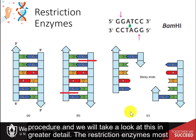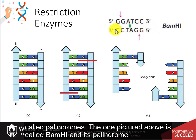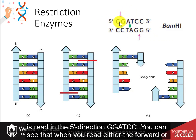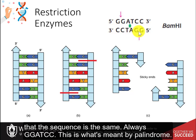The restriction enzymes most widely used in cloning recognize specific sequences within the DNA called palindromes. The one pictured above is called BamHI, and its palindrome is read in the 5' direction as G-G-A-T-C-C. You can see that when you read either the forward or the reverse strand in the 5' to 3' direction, the sequence is the same — always G-G-A-T-C-C. This is what is meant by a palindrome.